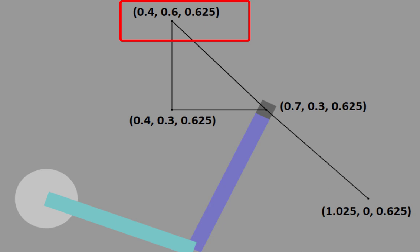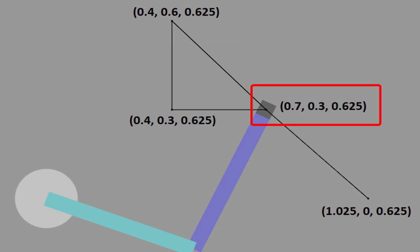Once again, the prismatic joint will be used to drop off the object at a certain height. After that, the robot should move to the initial location. I want this trajectory to be followed, so the very first step is to generate it. Now let us go back to the Simulink environment.